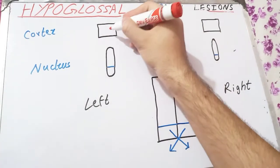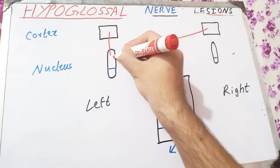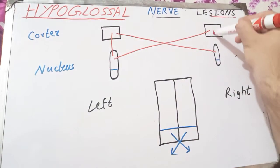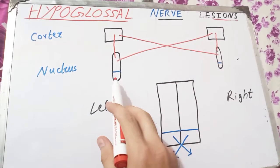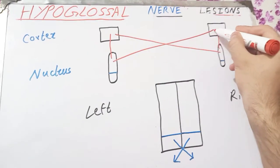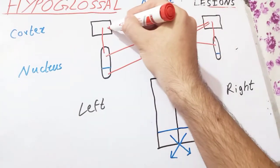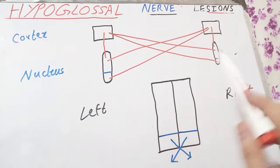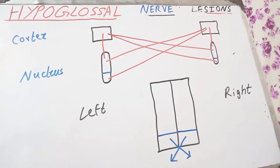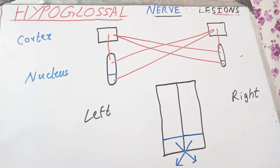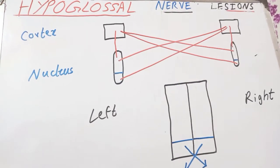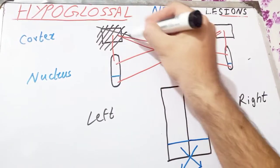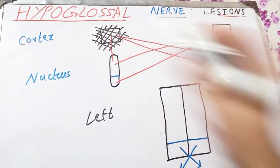The corticonuclear fibers to the upper part of the nucleus come from both cerebral cortices — both crossed and uncrossed innervation. But for the genioglossus part of the hypoglossal nucleus, there is only contralateral innervation: the right-sided genioglossus nucleus receives only left-sided cerebral cortex fibers, and the left-sided genioglossus nucleus receives only right-sided cortical fibers.